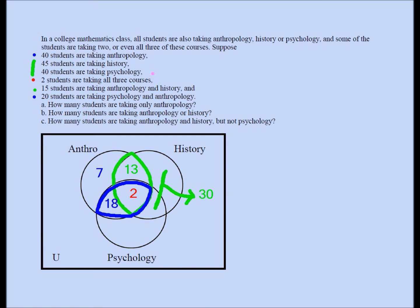The same applies to the psychology circle. 40 students are taking psychology, so all four regions of the psychology circle must add up to 40. We already have 18 plus 2 equaling 20 in the psychology-anthropology football, so the remaining two unknown regions — only-psychology and history-and-psychology-but-not-anthropology — must also add up to 20, because 20 plus 20 is 40. In most Venn diagram problems we can identify a number for each region, but here we can't — and that's okay, because maybe we don't need to.